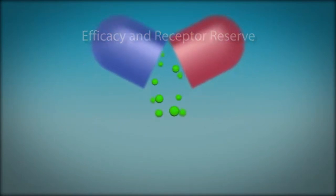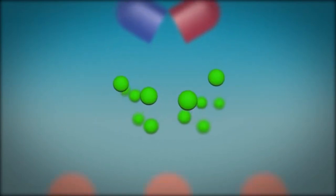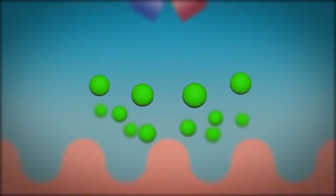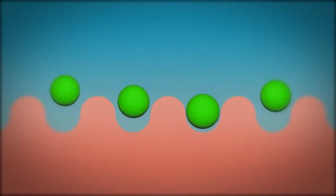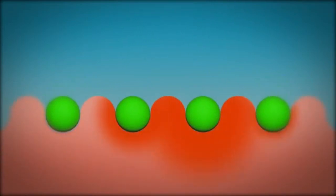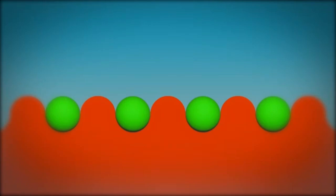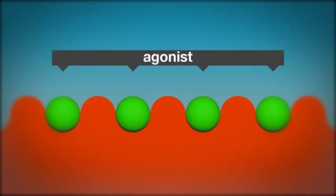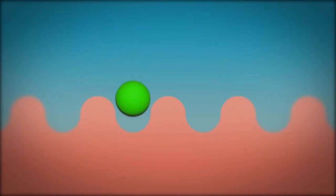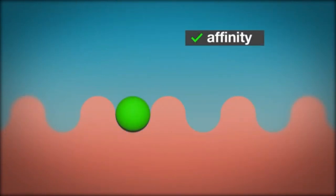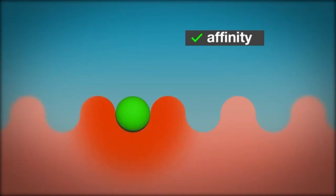A drug works by binding to a receptor in cells or tissue and activating that receptor to cause a response in the cells or tissue. This is known as an agonist. The ability of an agonist to bind to a receptor is known as its affinity. The ability of an agonist to activate its receptor is known as its efficacy.